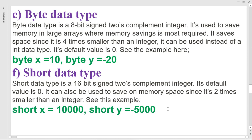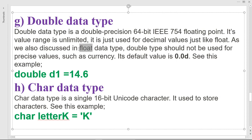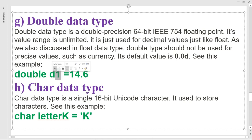The double data type is a 64-bit floating point. It is used the same way as the float data type — for storing values with decimal points — but double stores larger numbers with decimal points. For example, you write 'double' followed by the identifier and assign a value like 14.6.